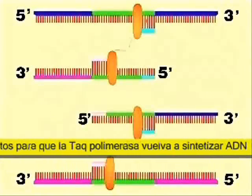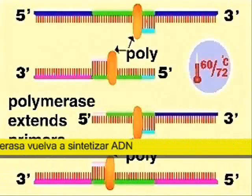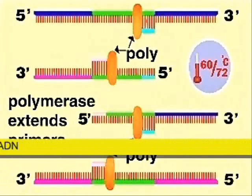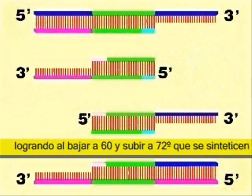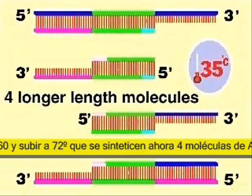The temperature can be raised to 72 degrees to speed this reaction. At the end of cycle two, four partially double-stranded molecules are produced.